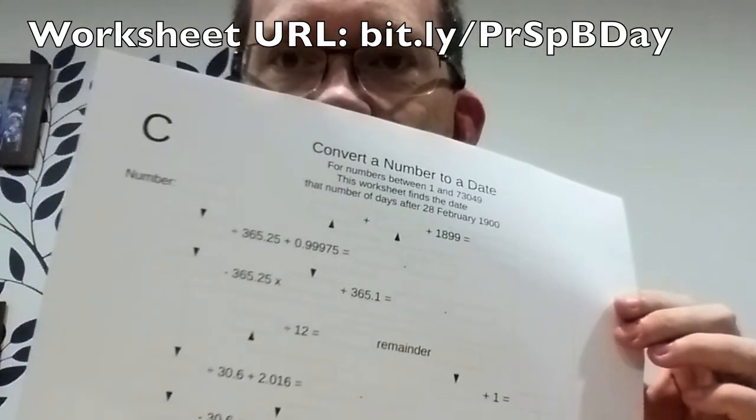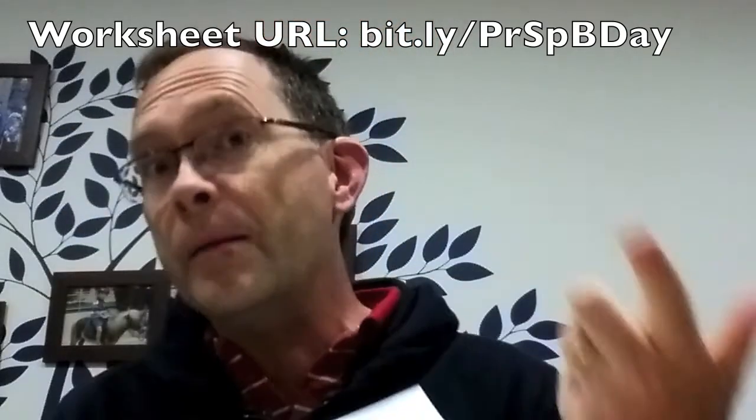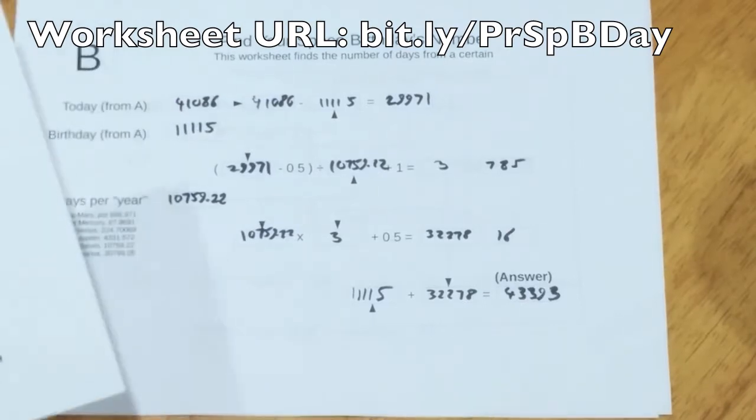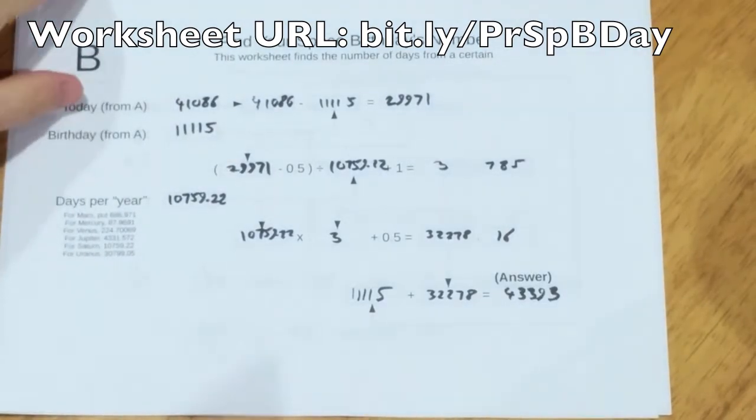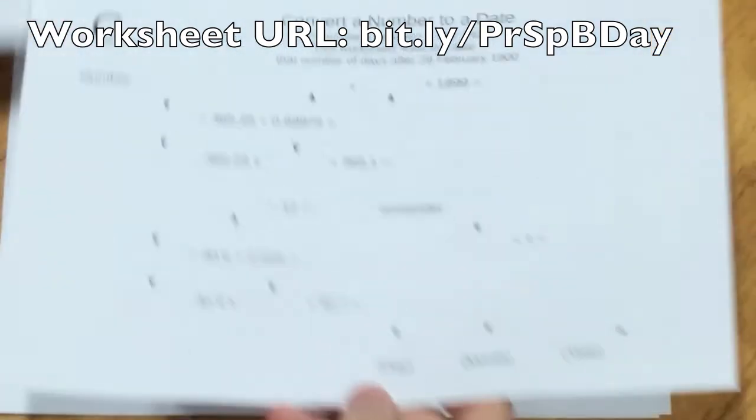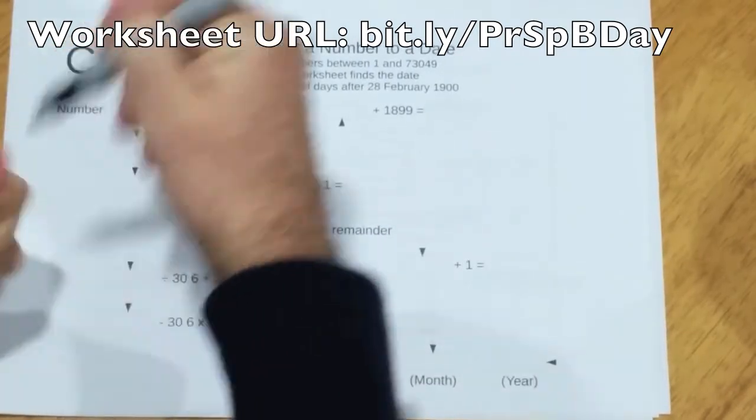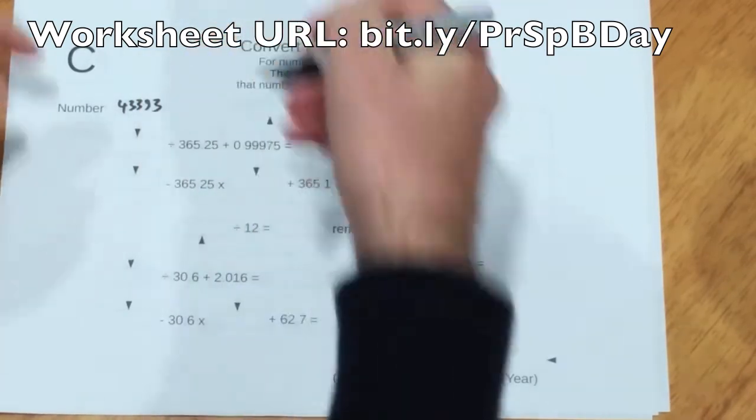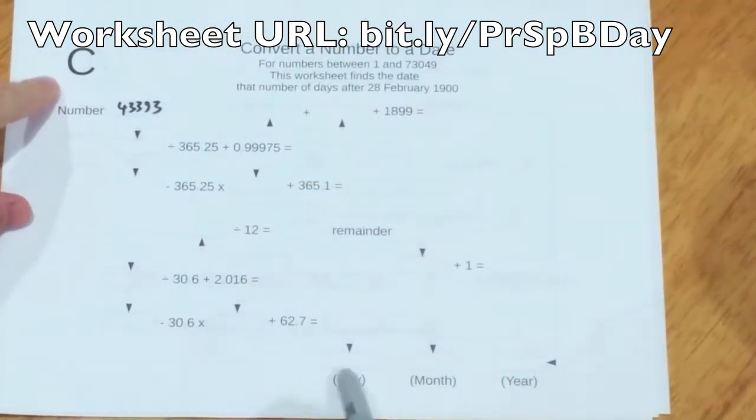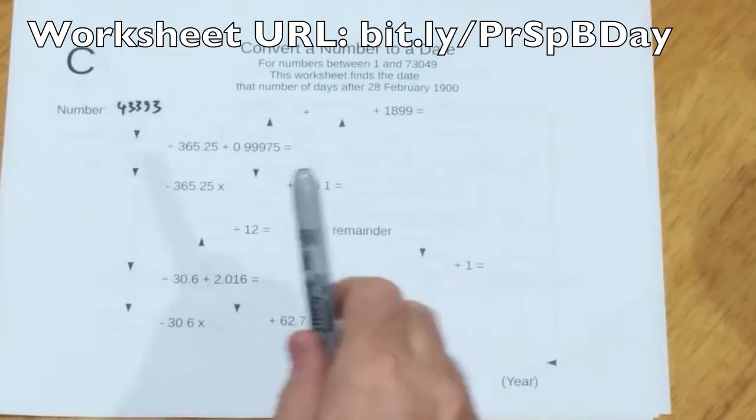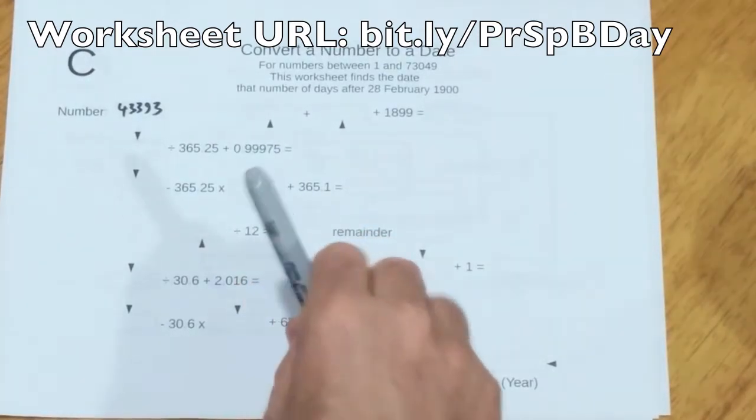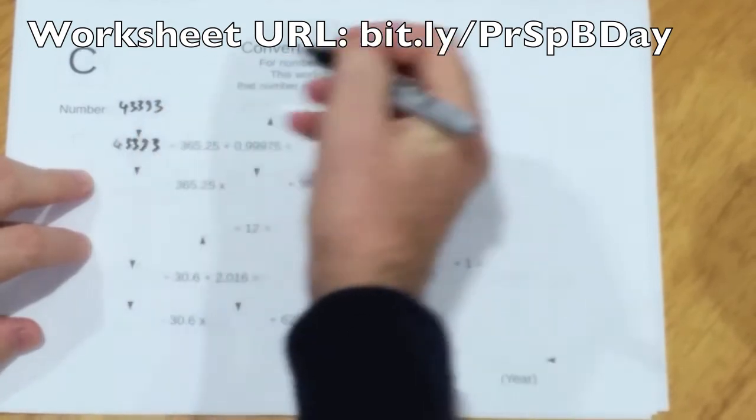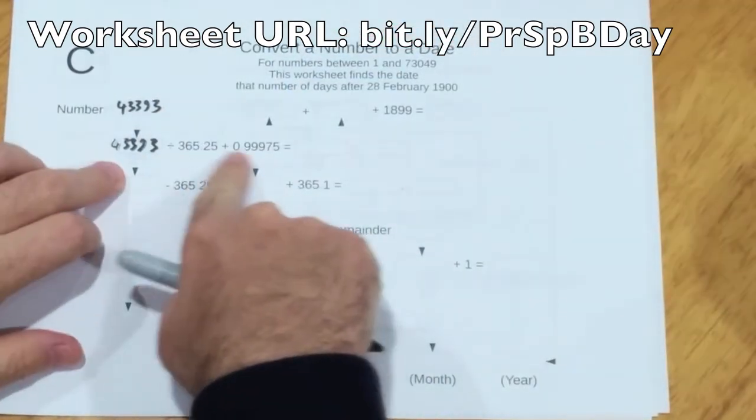And these all come in one printable file with some instructions. So we're going to take that number, 43393. And this worksheet, worksheet C, will convert that to a date. So again, it's the same procedure. We'll copy the numbers along arrows.